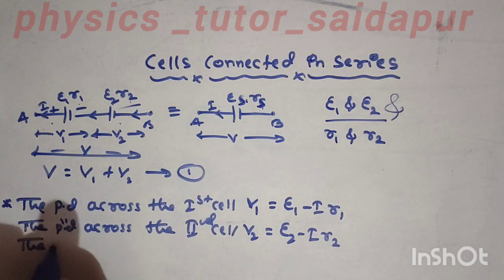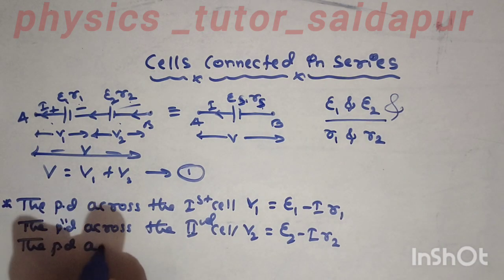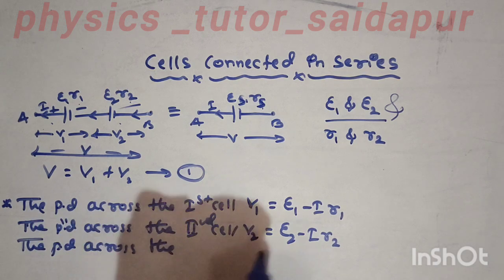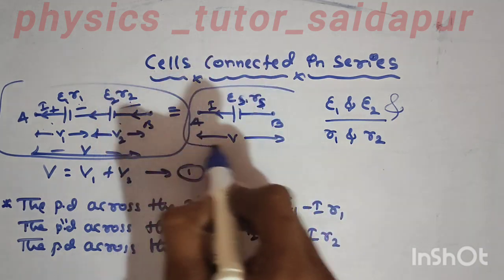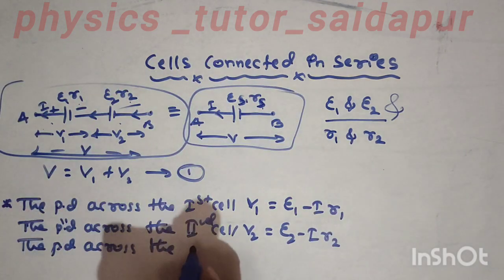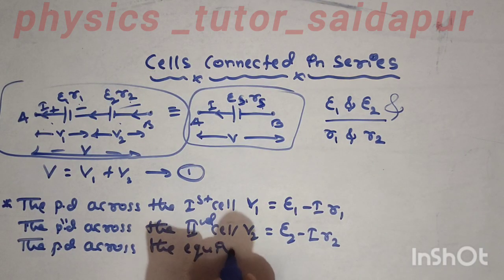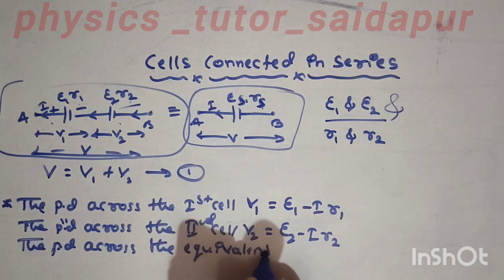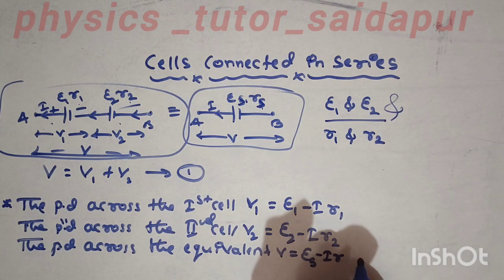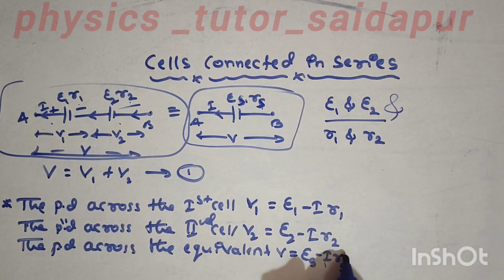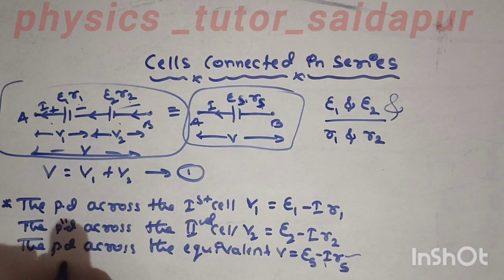Next, the potential difference across the equivalent circuit. This is considered as V, with cells connected in series, and current passing through the internal resistance connected in series.